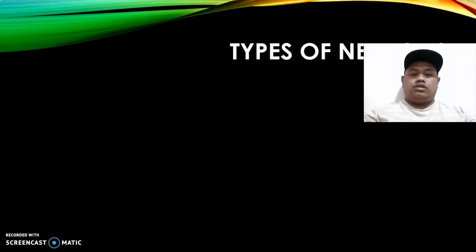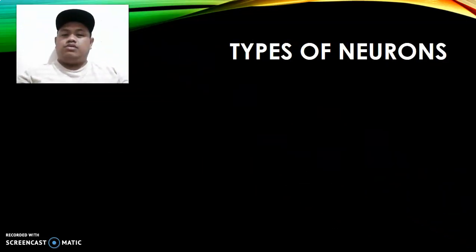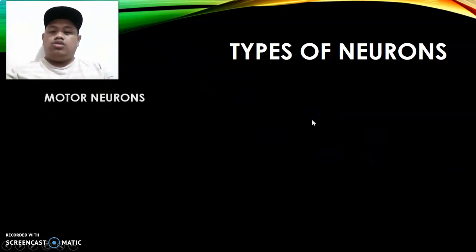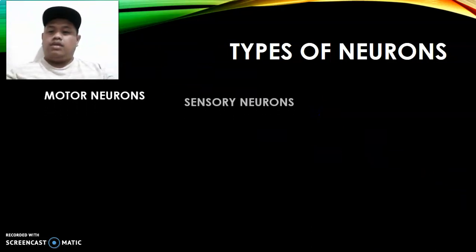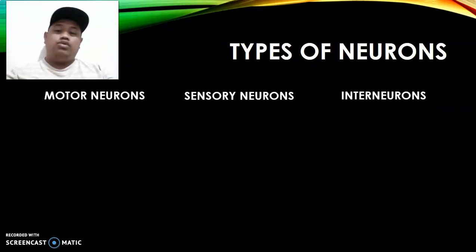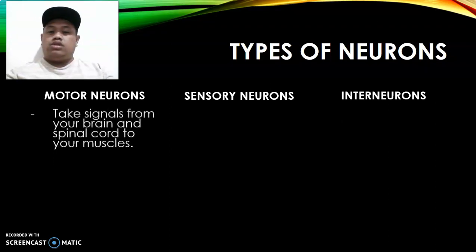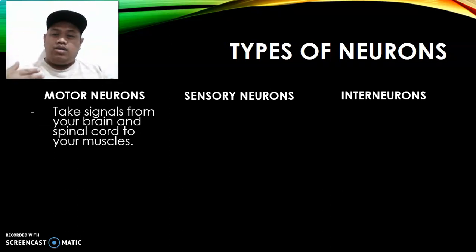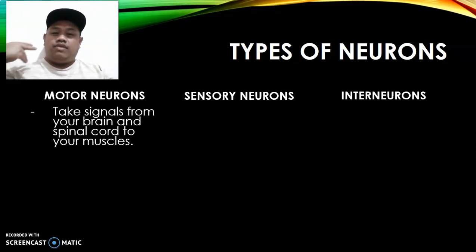There are several types of neurons. Number one is your motor neurons. We also have your sensory neurons and your interneurons. Motor neurons are responsible for taking signals from your brain and spinal cord to your muscles — meaning from your brain to your muscle — transmitting the response so the body can react to any stimuli.